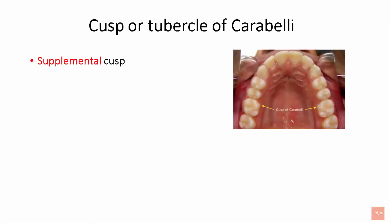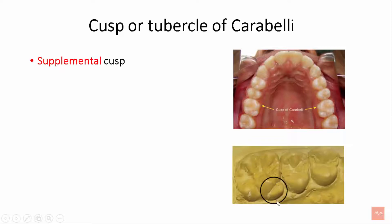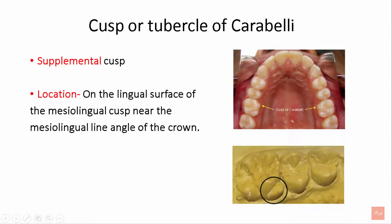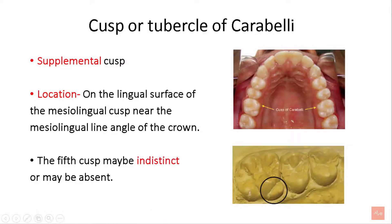The cusp of Carabelli is the supplemental cusp, also known as the fifth cusp. Its location is on the lingual surface of the mesolingual cusp, near the mesolingual line angle of the crown. This fifth cusp may be indistinct or may be absent as well.